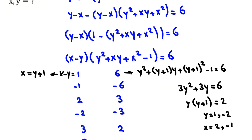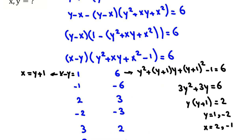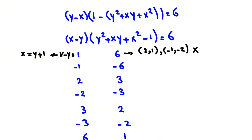Checking these two answers — (2, 1) and (−1, −2) — neither of them works in the original equations. So we've reached these two candidates and none of them work. For the second case, x minus y equals −1.